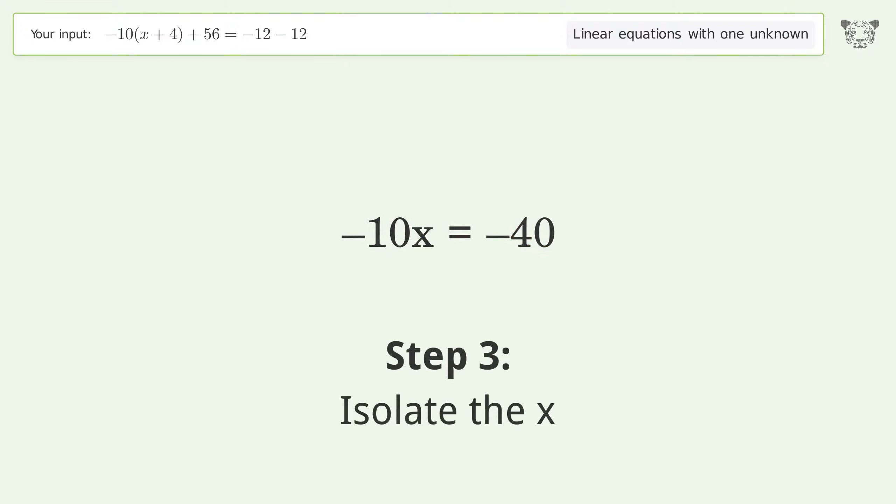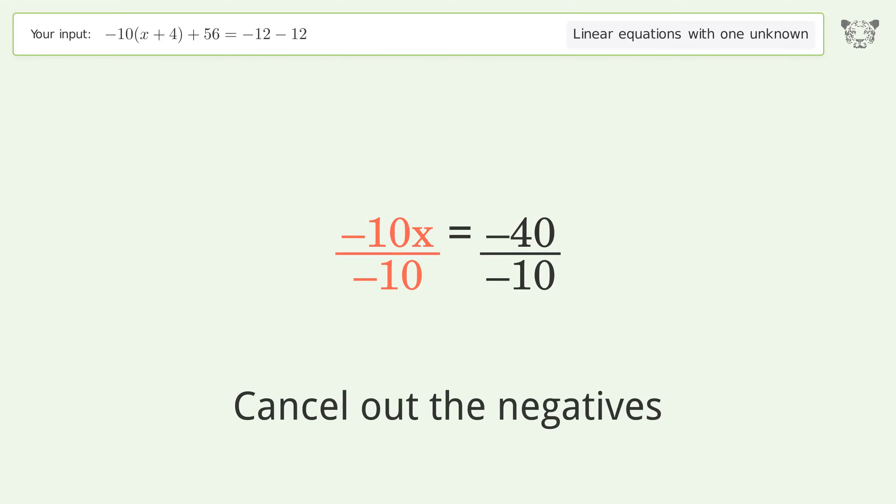Isolate the x. Divide both sides by negative 10. Cancel out the negatives.